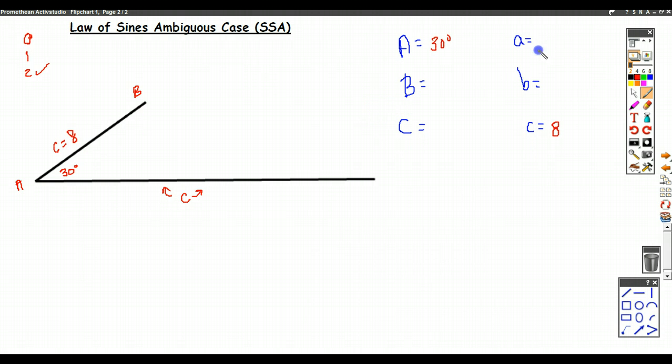And let's say we're given information about A. Now we saw that A could be given and it's too short. No triangles are possible. And we saw how the algebra works out when that's the case.